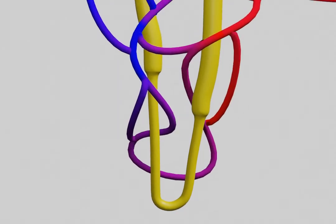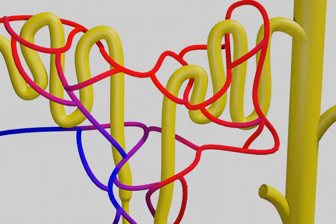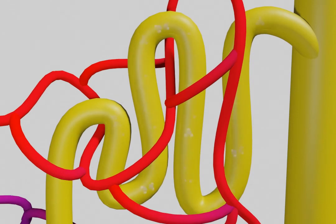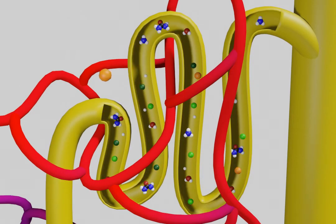After the loop of Henle, the filtrate moves onto the distal tubule. We'll continue to reabsorb a little bit of sodium and chloride, but for the most part, we're left with the waste products.